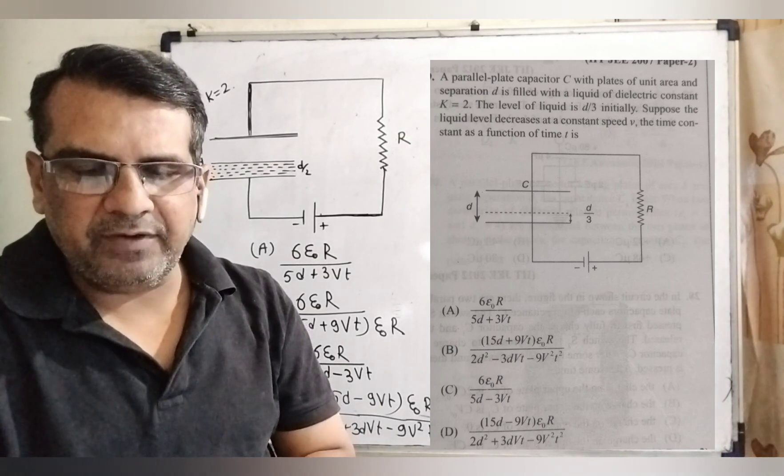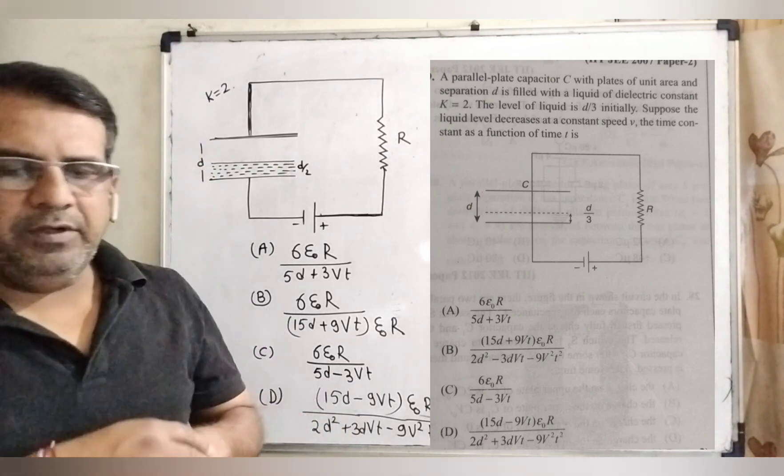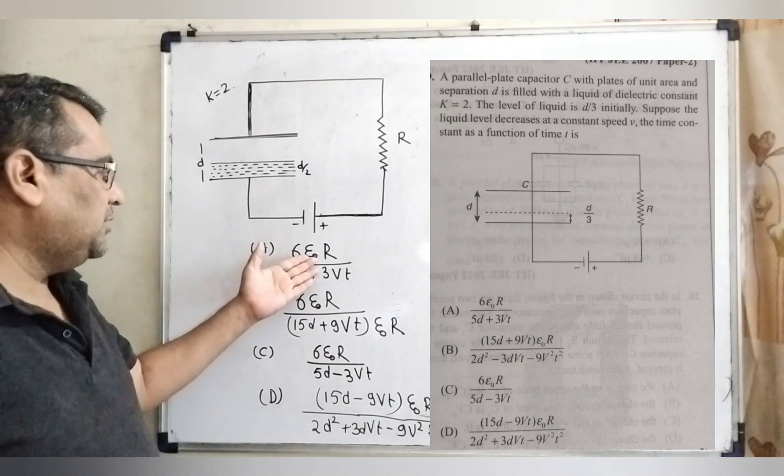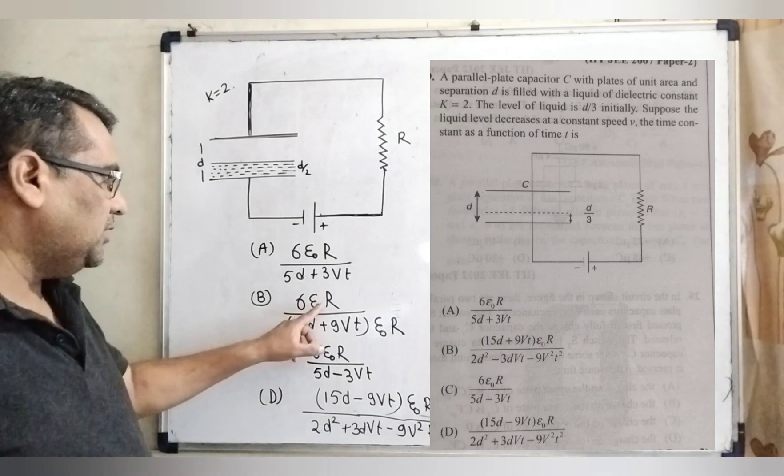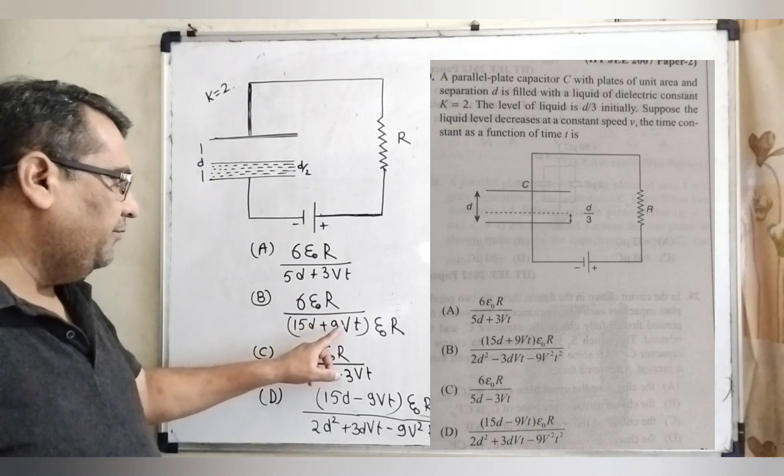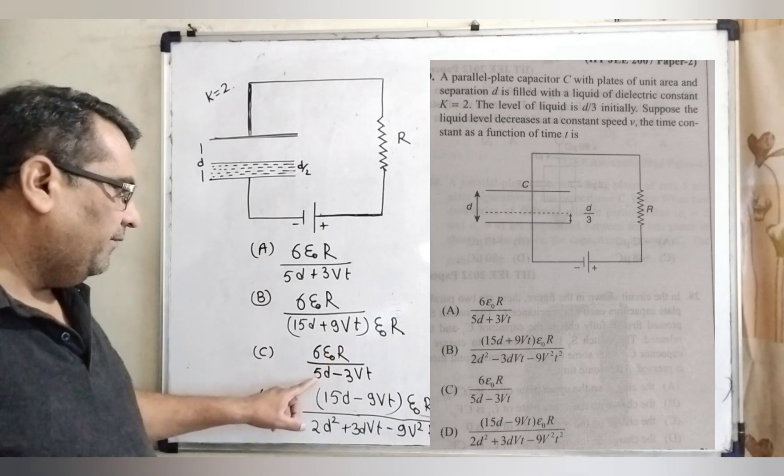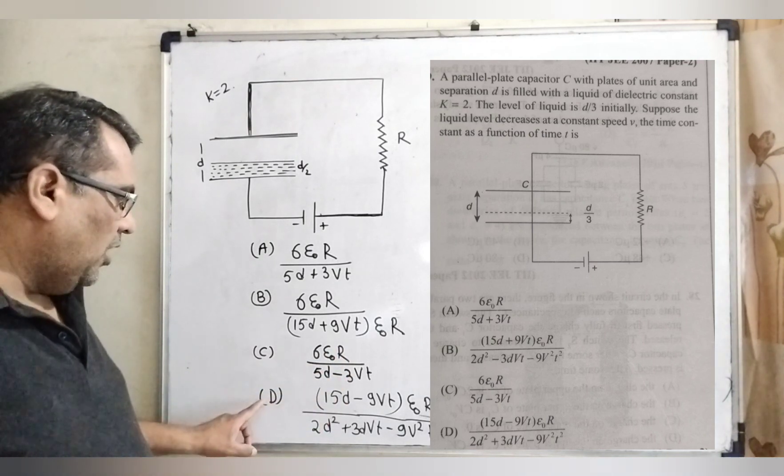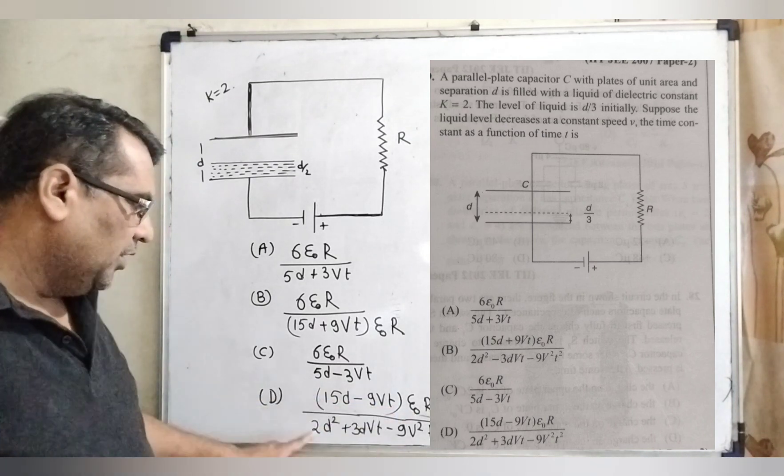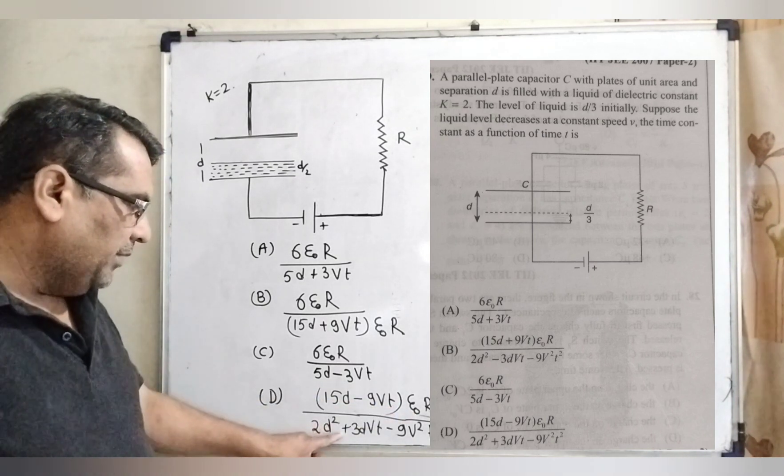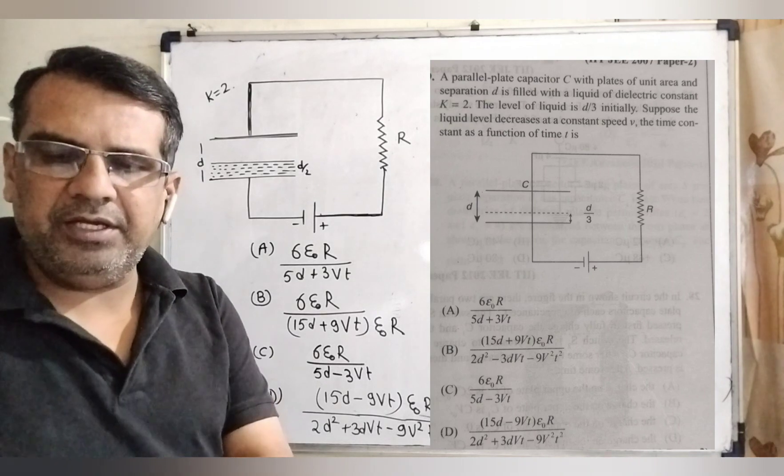The time constant as a function of time t is: we have given four options. A: 6 epsilon naught R over 5d plus 3Vt. Option B: 6 epsilon naught R over 15d plus 9Vt into epsilon naught R. C: 6 epsilon naught R over 5d minus 3Vt. Option D: 15d minus 9Vt into epsilon naught R over 2d square plus 3dVt minus 9V square t square. And this question is asked IIT-JEE 2008.